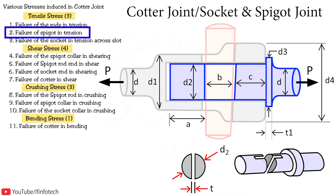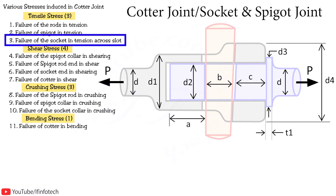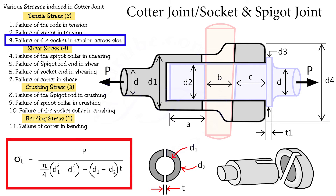The next failure occurs due to tensile stress at the diameter of the spigot end. The formula is load P divided by the area of cross-section, i.e., pi by 4 times d2 squared minus thickness t times (d1 minus d2). So these are the 3 tensile stresses in cotter joint.